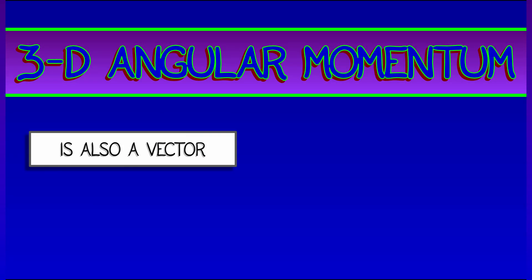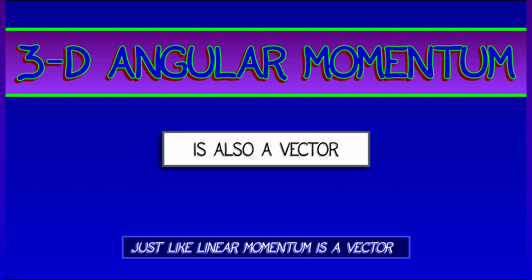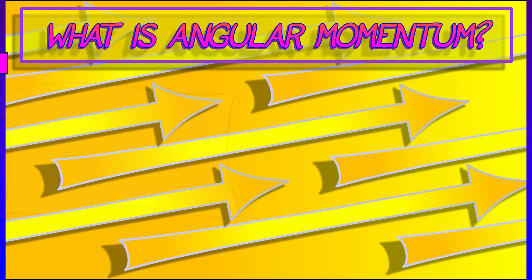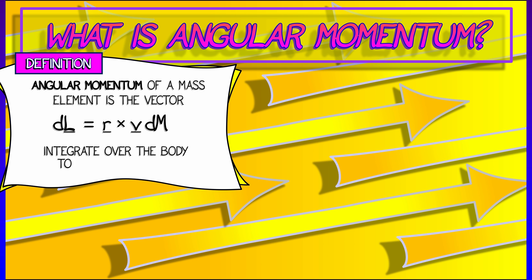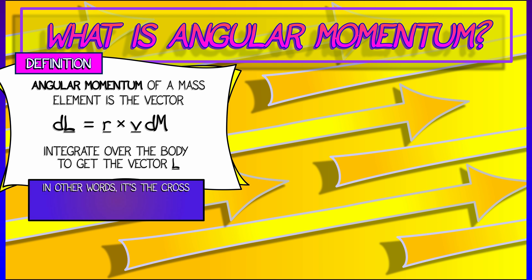Now that we've got angular velocity, let's consider angular momentum, which, just like linear momentum, is a vector in 3D. Here is a definition at the elemental level. The angular momentum element dl of a mass element dm is the vector r cross v times dm. To get the full angular momentum vector L, you integrate this element over the entire body. The angular momentum element is really the cross product of the position vector r with the linear momentum element v times dm.